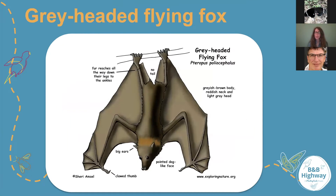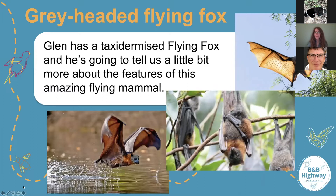Looking more closely at our grey-headed flying fox, we can see a number of features that help us recognise them and appreciate their incredible evolution. They've got big ears for listening. They've got clawed thumbs for various things — they can even climb with them. Little baby bats are born with an extra thumb claw that helps them grip onto their mum while she's flying, so she can continue looking for food even with the baby hanging on her belly. They hang upside down, using those amazing feet that hold onto the limbs of trees — that's how they spend the majority of their lives. I'm really excited to show you now with Glenn, who's going to give us more detail about the flying fox and parts of their body.